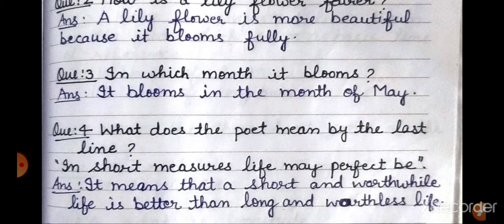Oak tree की life बहुत बड़ी होती है, but जो lily flower है, उसकी life one day की ही होती है। तो इसका मतलब ये है कि जो छोटी और meaningful life है, वो better है — लंबी और worthless यानी useless life के मुकाबले। मतलब short life हो, अच्छी हो, जिसमें हम खुद भी enjoy करें और दूसरों को भी happiness दें। That's all about the question answers.